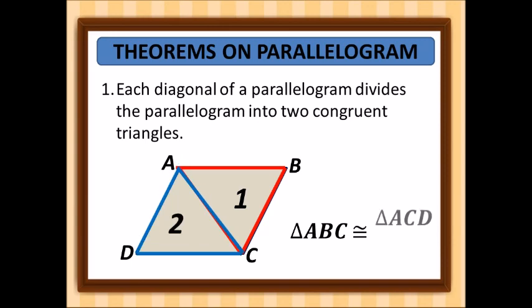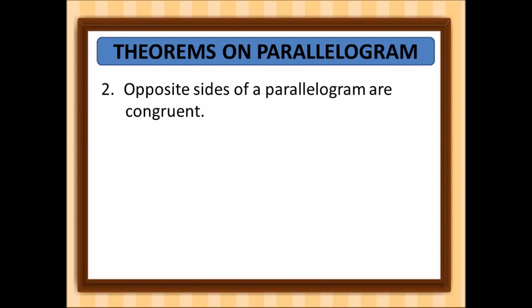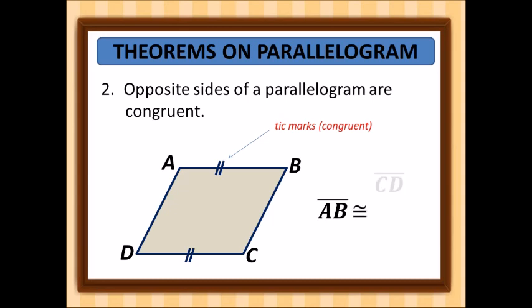The second theorem: opposite sides of a parallelogram are congruent. In parallelogram ABCD, the tick marks indicate the congruent parts. So AB is congruent to CD, and we also have the opposite sides: AD is congruent to BC.